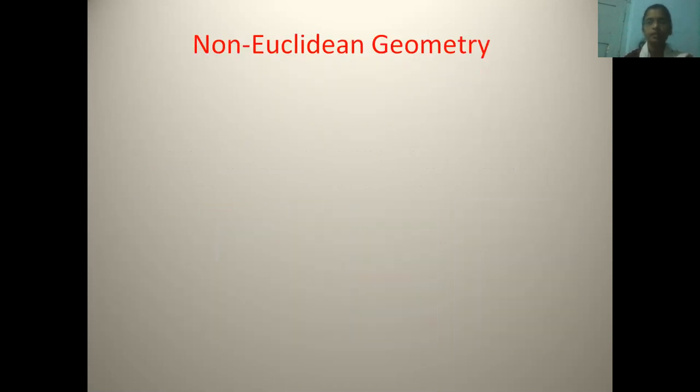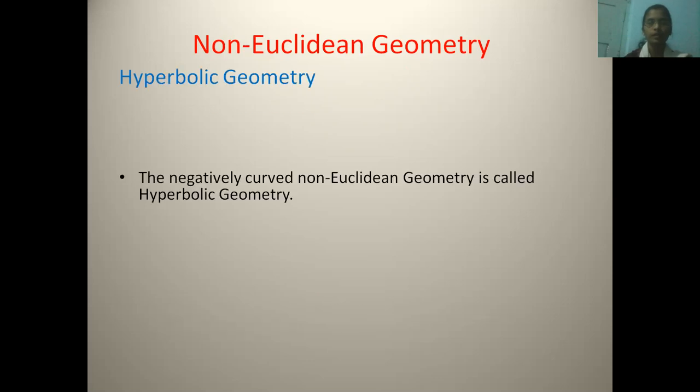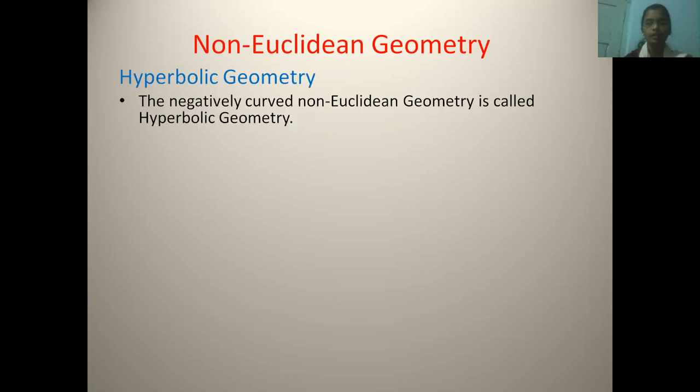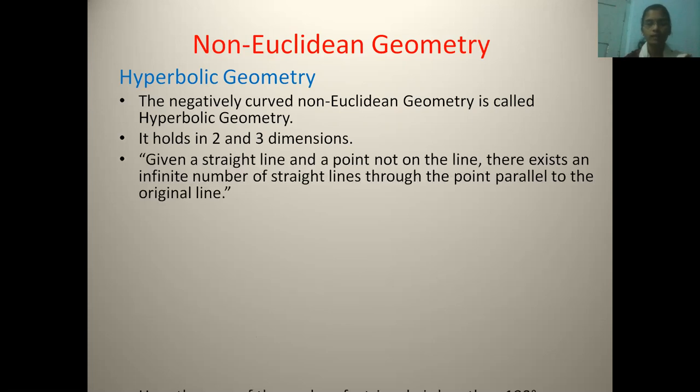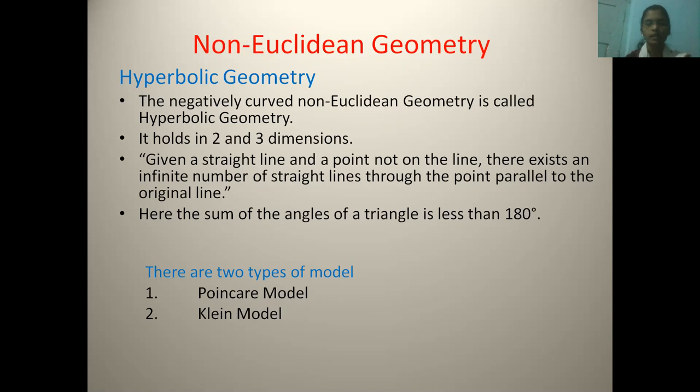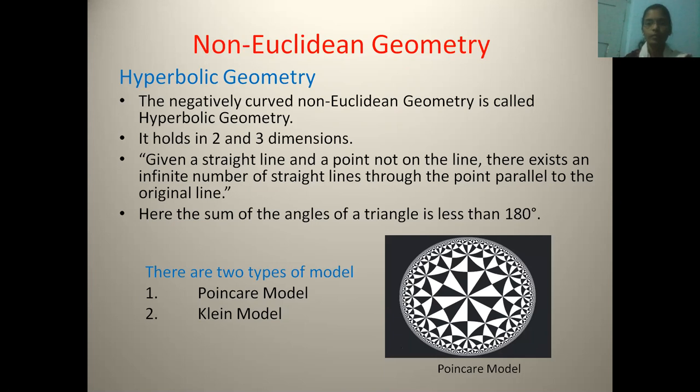Non-Euclidean geometry. First, you will see the hyperbolic geometry. It is the negatively curved geometry. And here, it holds in two and three dimensions. Here, the sum of angles of the triangle is less than 180 degrees. This geometry can be proved by two models, that is Poincare model and Klein model. These models we can study in your higher classes. This is the image of Poincare model.